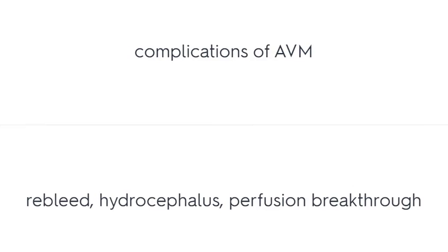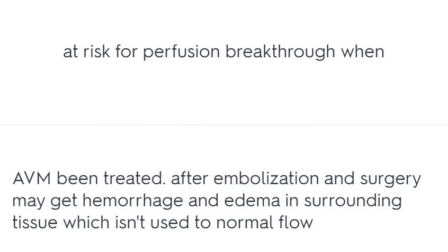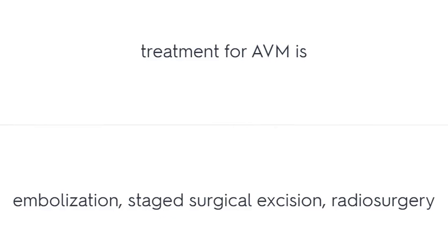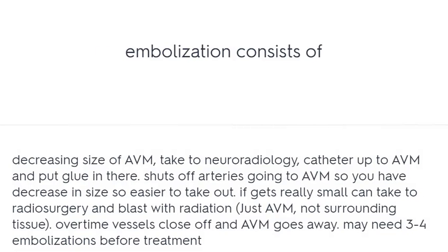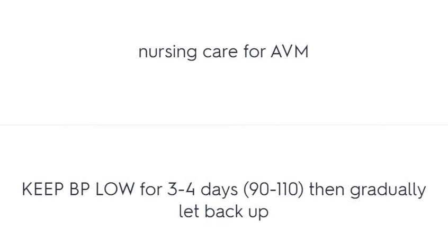Complications of AVM include rebleed, hydrocephalus, and perfusion breakthrough. The patient is at risk for hydrocephalus if blood gets into the CSF. Perfusion breakthrough occurs when the AVM has been treated and after embolization and surgery the surrounding tissue — not used to normal flow — may develop hemorrhage and edema. Treatment for AVM includes embolization, staged surgical excision, and radiosurgery. Requirements for radiosurgery: the AVM must be less than 3 cm, it takes 1 to 2 years for the AVM to disappear from the system, and there is a continued risk for rebleed during that time. Nursing care: keep BP low.